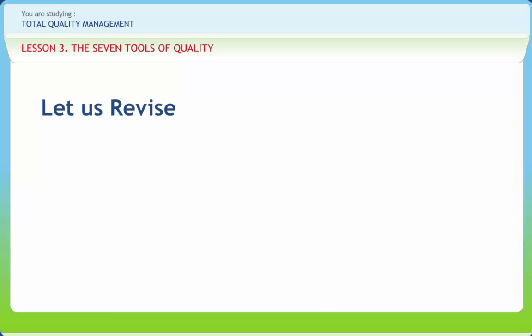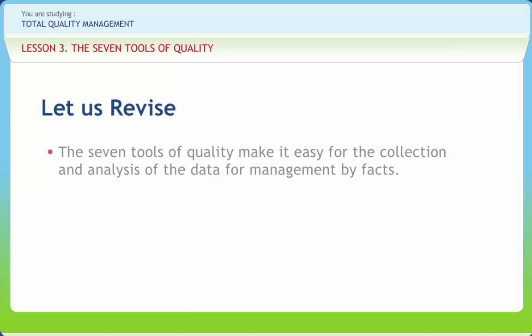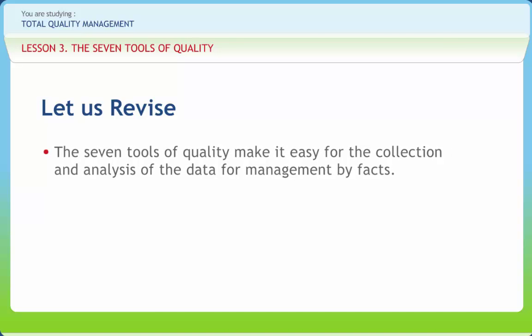Before we end, let us briefly revise what we have studied so far. Management cannot expect employees to effectively participate in problem solving and continuous improvement programs, that is to be empowered, unless they are provided training in how to address problems. The seven tools of quality make it easy for the collection and analysis of data for management by facts. They can assist the quality professional in root cause analysis. They help organizations understand their processes in order to improve them.